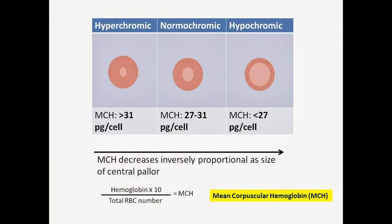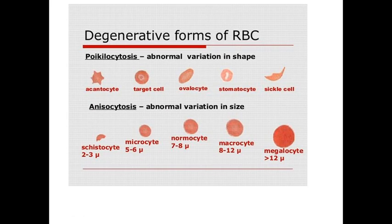According to hemoglobin content in erythrocytes, we divide anemia into hyperchromic, normochromic, and hypochromic. Normally, erythrocytes contain 27 to 31 picograms of hemoglobin per cell. If more than 31 picograms, this is hyperchromic. If less than 27 picograms, this is hypochromic. Hypochromic is typical in iron deficiency anemia, and hyperchromic in B12 deficiency anemia.